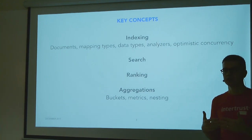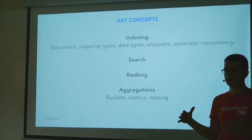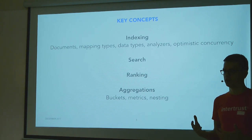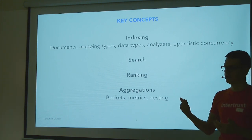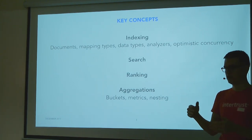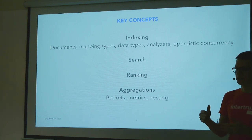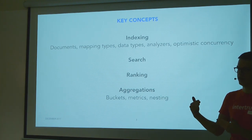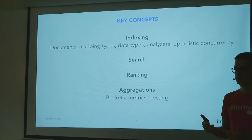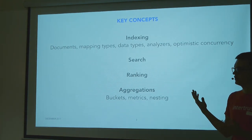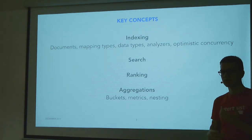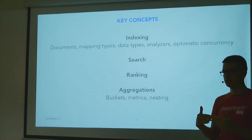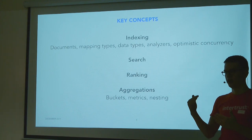When updating documents, you might have multiple clients working on the same Elasticsearch cluster. To avoid one client overriding another's work, you can use optimistic concurrency — you tell Elasticsearch what you think the current version of the data is, and if the actual indexed version is higher, it will reject your operation. Similarly, you can provide your own versioning. By default, Elasticsearch does versioning for you, but you can supply your own so it checks that every update or delete has a higher version than what was previously indexed.